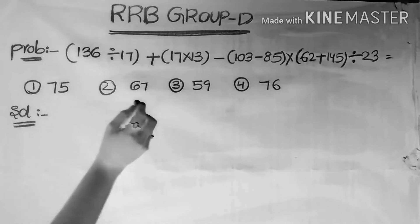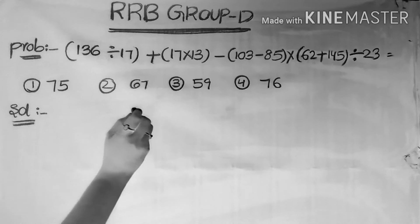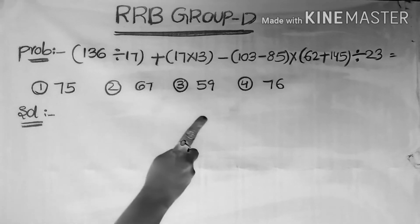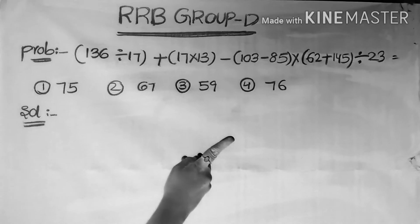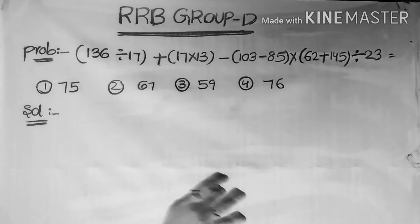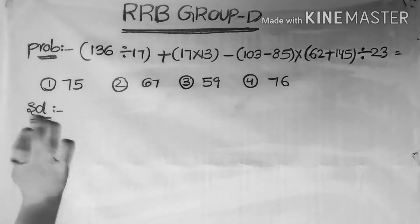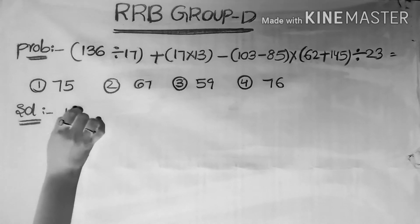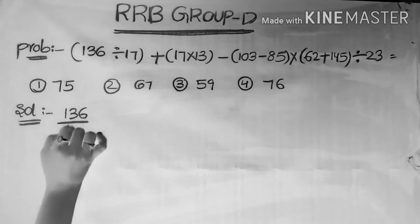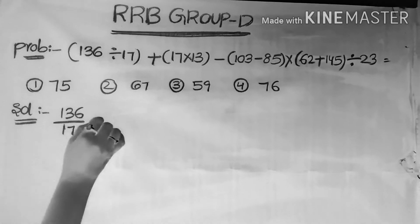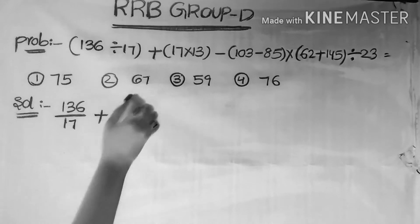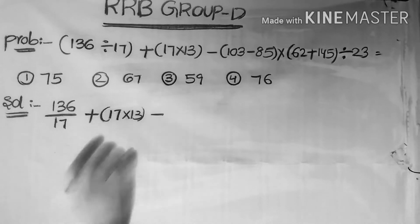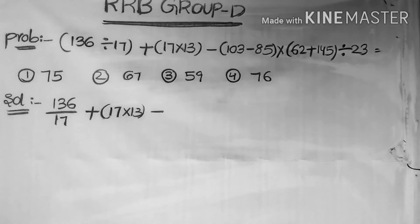136 divided by 17, plus 17 into 13, minus 103, minus 85 into 62, plus 145 divided by 23. So first we take the given expression: 136 divided by 17, that is 136 by 17, plus 17 into 13, minus 103, minus 85.